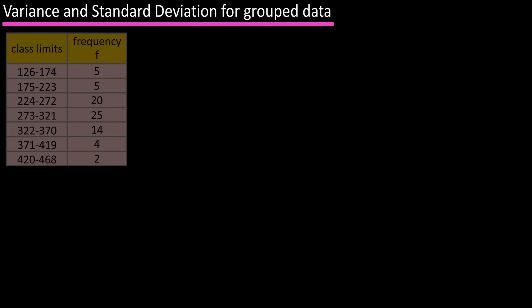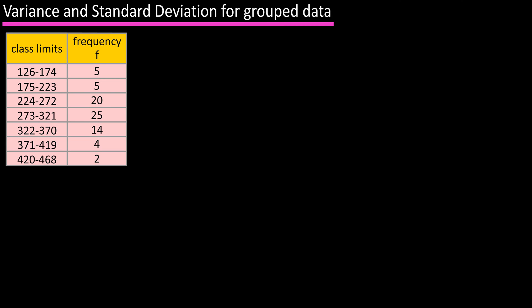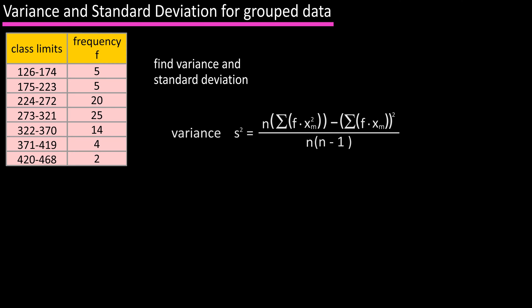Let's say we're given a frequency distribution table and we want to find the variance and standard deviation for this grouped data. The formula for finding the sample variance for grouped data is: s² = [n × Σ(f · xm²) − (Σ(f · xm))²] / [n(n − 1)].